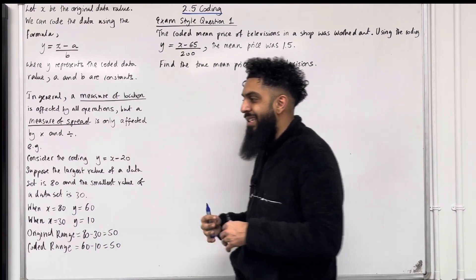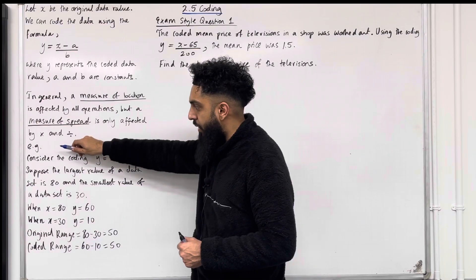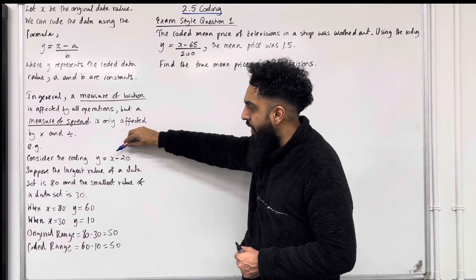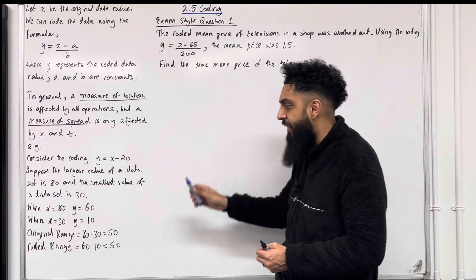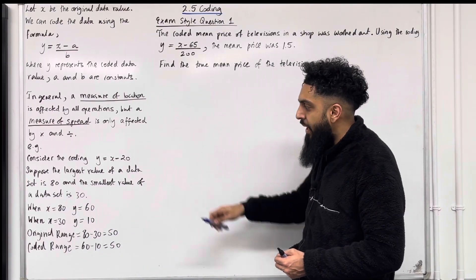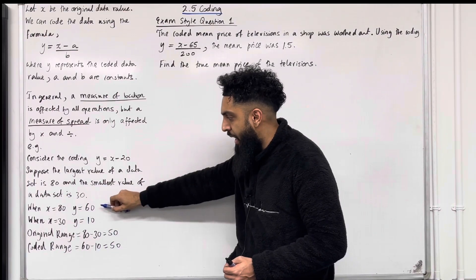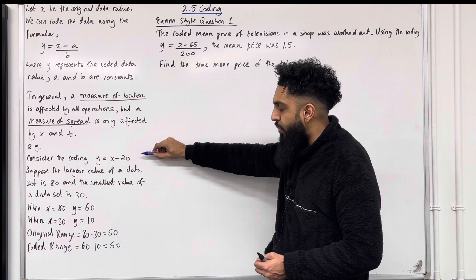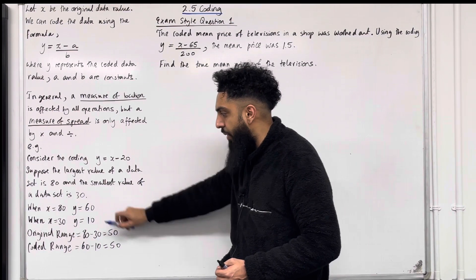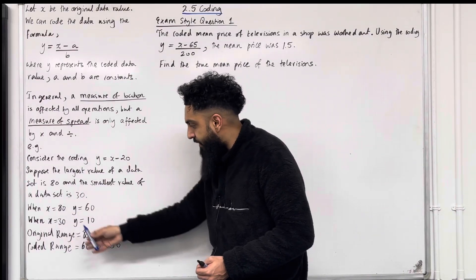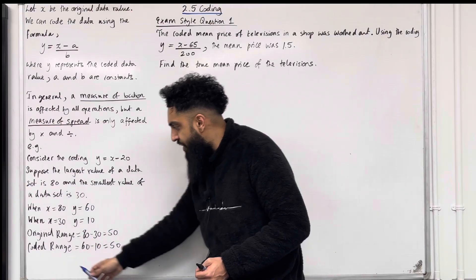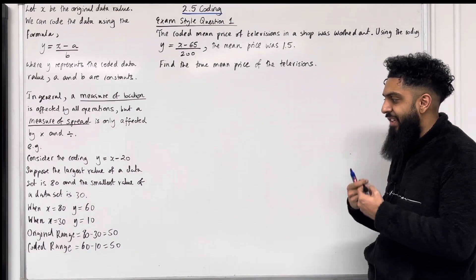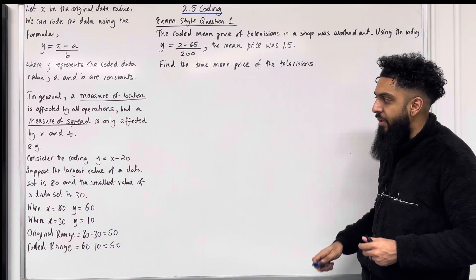Let's have a look at an example of a measure of spread — in particular, the range. Consider the coding y equals x minus 20. y is the coded data value, x is the original data value. Suppose the largest value of a data set is 80 and the smallest is 30. When x equals 80, y equals 80 minus 20, which is 60. When x equals 30, y equals 30 minus 20, which is 10.